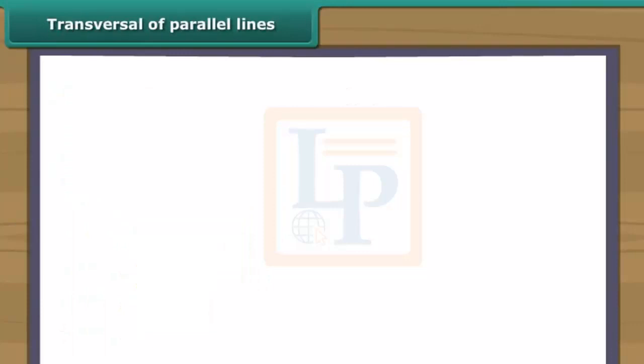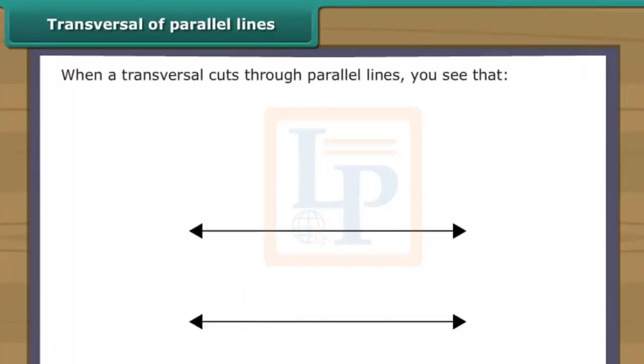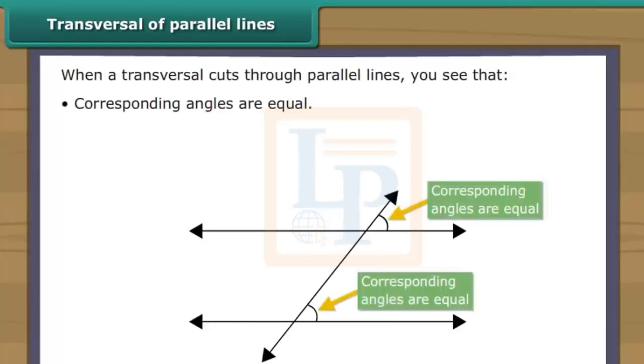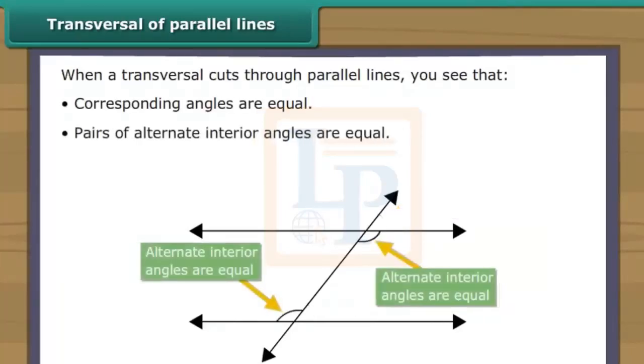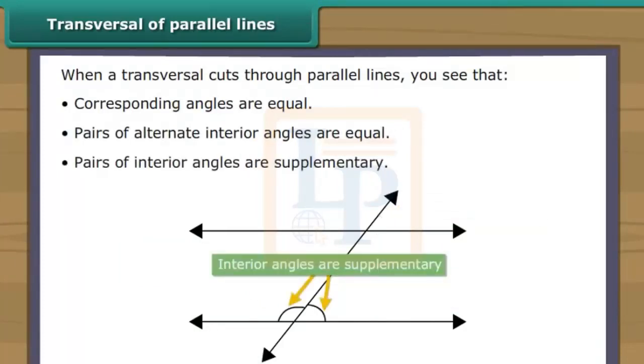Transversal of parallel lines. When a transversal cuts through parallel lines, you will see that corresponding angles are equal. Pairs of alternate interior angles are equal. Pairs of interior angles are supplementary.